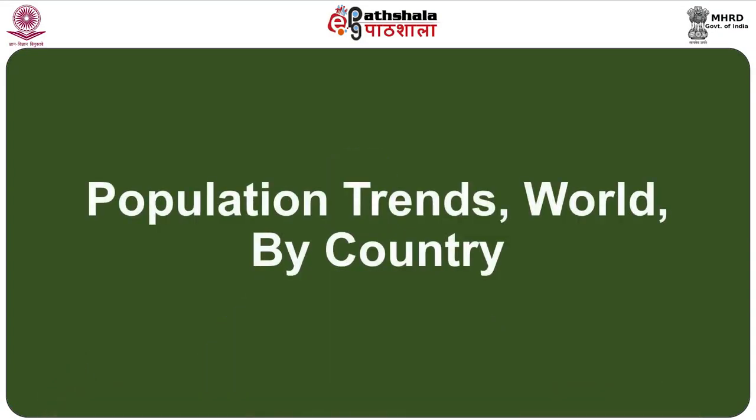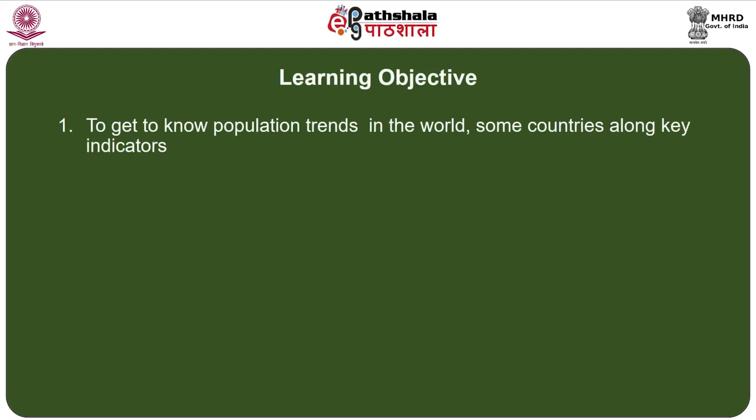Dear students, as part of the paper on population theories, this module focuses on population trends by world and also by some countries, both developed and developing. The major learning objective is to understand population trends and key indicators of population and other characteristics. A set of countries and their data have been given for each indicator to depict a broader range; selecting appropriate countries and drawing conclusions from each country is very important.